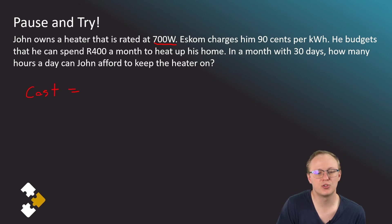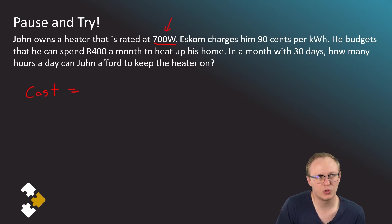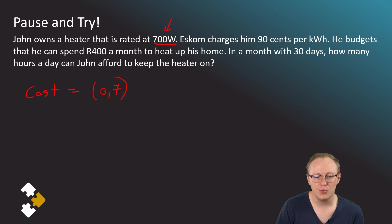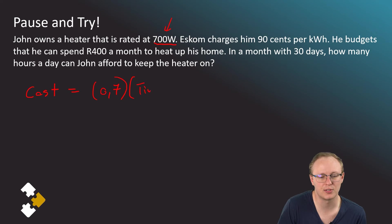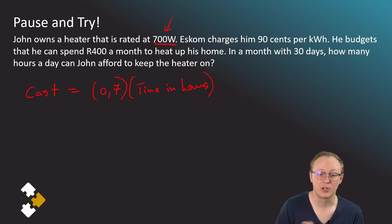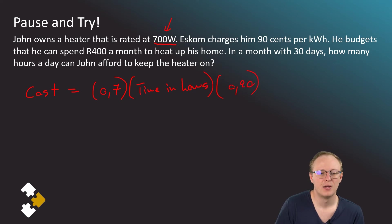We know cost equals the appliance rating in kilowatts times time in hours times the cost per kilowatt hour. The heater is 700 watts, so dividing by 1000 gives 0.7 kilowatts. We then multiply by time in hours and by the cost per kilowatt hour, which is 0.90 rand.